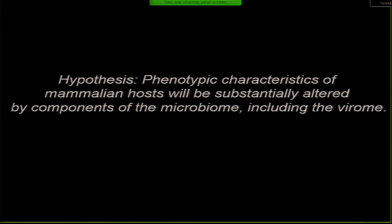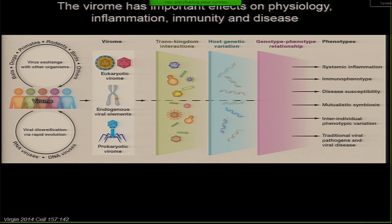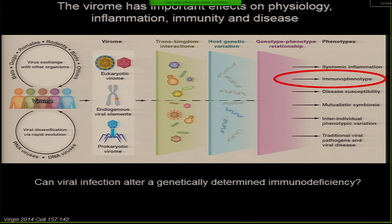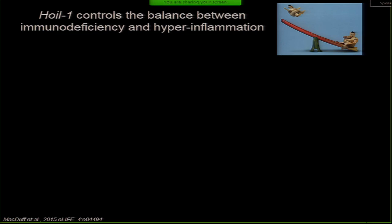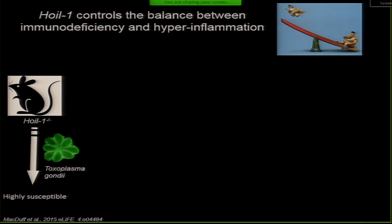That's an example of herpes virus latency conferring a symbiotic advantage on the host. We hypothesized that phenotypic characteristics of mammalian hosts might be substantially altered. So we asked: could a chronic eukaryotic viral infection alter a profound genetic phenotype in a host? To answer that, I'll tell you about the gene HOIL1. HOIL1 is mutated in humans — children who are deficient can suffer from severe infections but also hyperinflammation at baseline. In the original study, three children in two families died from this deficiency.